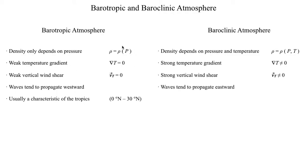In a baroclinic atmosphere, the waves and disturbances — cyclones and all atmospheric activity — tend to propagate from west to east. That's what you're more accustomed to if you're north of 30 degrees north latitude. Typically, a baroclinic atmosphere is found in the mid-latitudes, between about 30 degrees north and 60 degrees north in the northern hemisphere, and between 30 degrees south and 60 degrees south in the southern hemisphere.